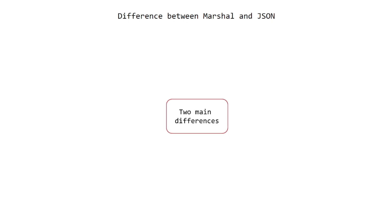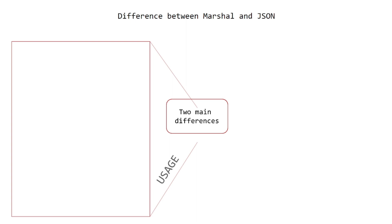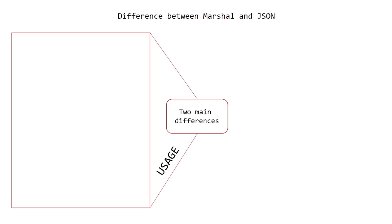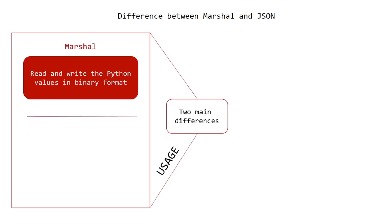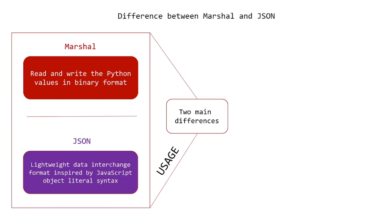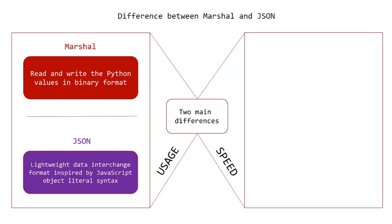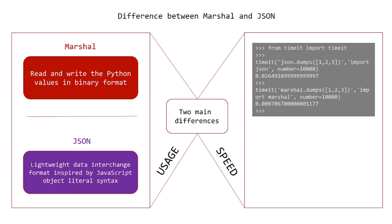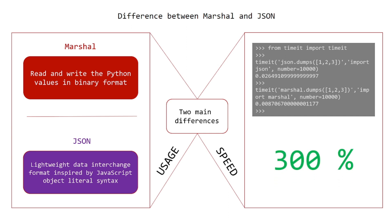Difference between Marshall and JSON — let's look at two main differences. The first is usage: Marshall reads and writes Python values in binary format, while JSON is a lightweight data interchange format inspired by JavaScript object literal syntax. The second difference is speed: as you can see, the execution time of Marshall is faster than JSON by around 300%.